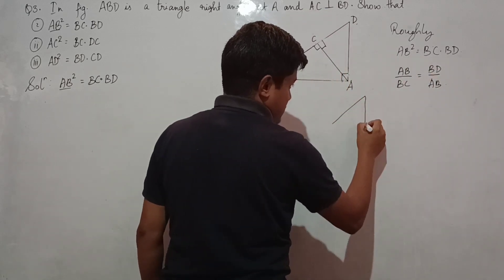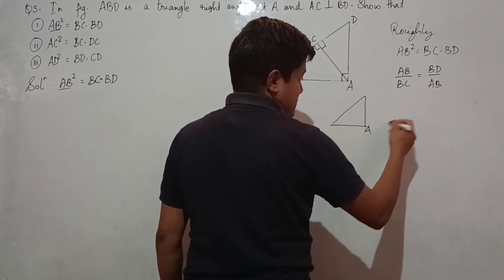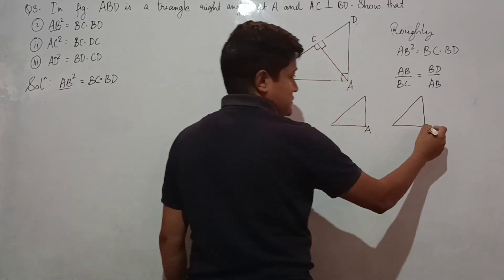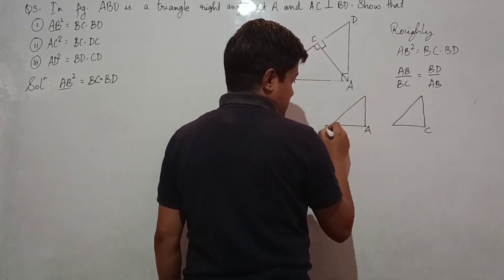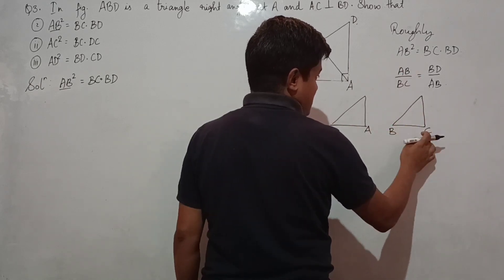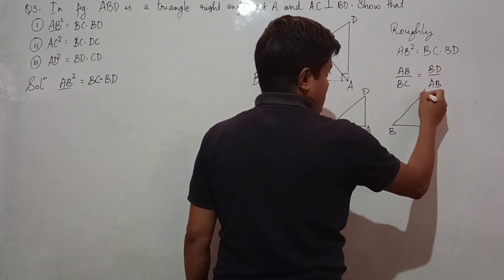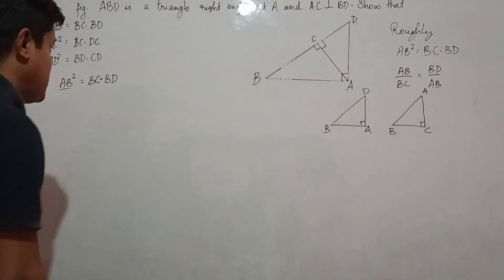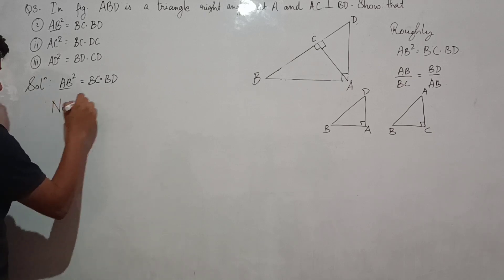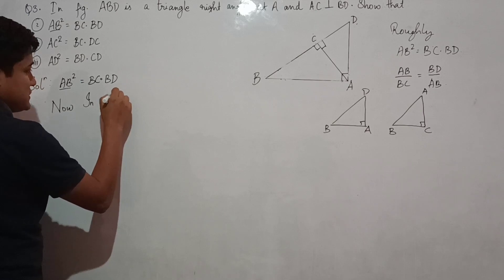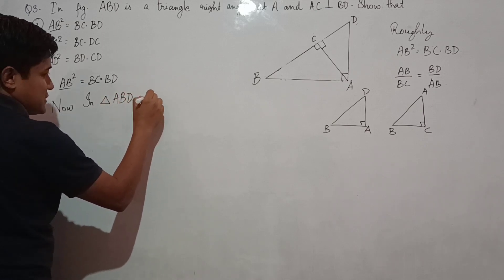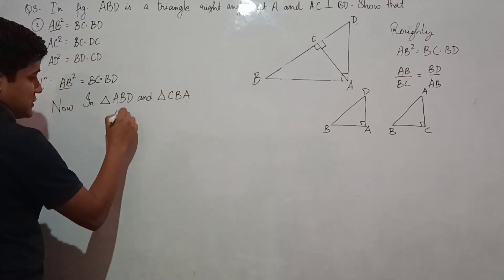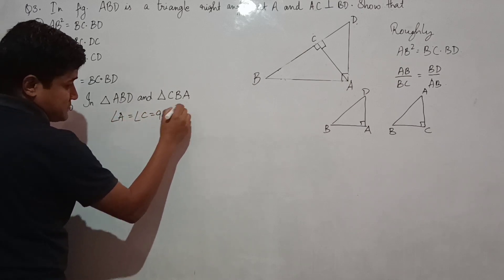If we draw the triangle roughly, A is there with 90 degrees. For triangle ACB, angle C is 90 degrees, and C is placed accordingly. In triangle ABD and triangle CBA, angle A equals angle C equals 90 degrees, which is given.